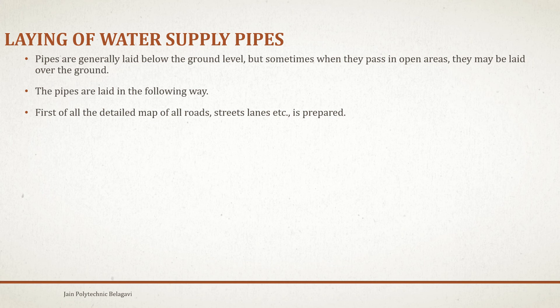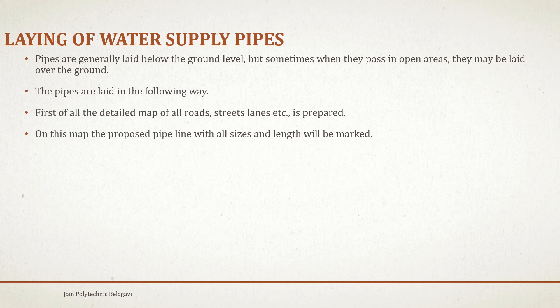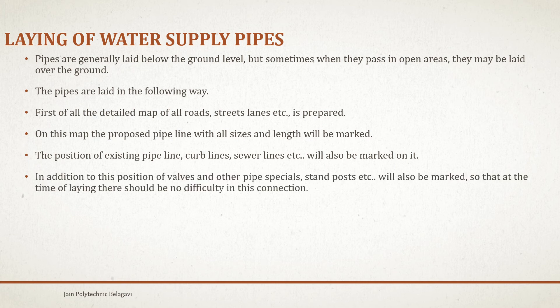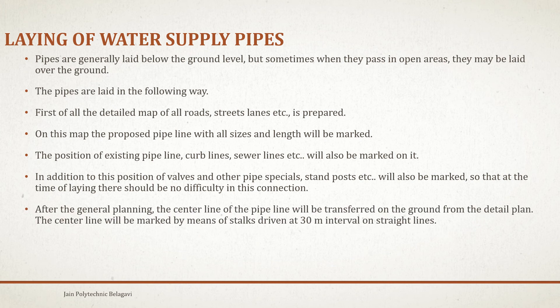First of all, a detailed map of all routes, street lanes, etc. is prepared. On this map the proposed pipe plan with all sizes and lengths will be marked. The position of existing pipelines, curved lines, and sewer lines will be marked on it. In addition, the position of valves and other pipe specials and standposts will also be marked, so that at the time of laying there should not be difficulty in the connection.